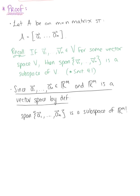This allows us to conclude that since the column space of A is defined as the span of the column vectors A₁ through Aₙ,